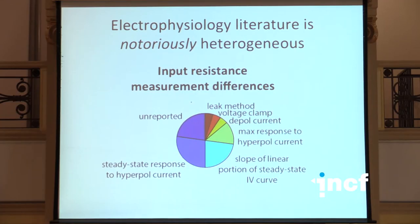Scientists kind of just do whatever they want, so these differences affect the data. Everyone thinks: these differences are big, so I'm just going to go collect my own data. Another difference is that even the nomenclature itself is heterogeneous. For a simple property like input resistance, it's measured a number of different ways — scientists don't even agree on the simple meanings of things.